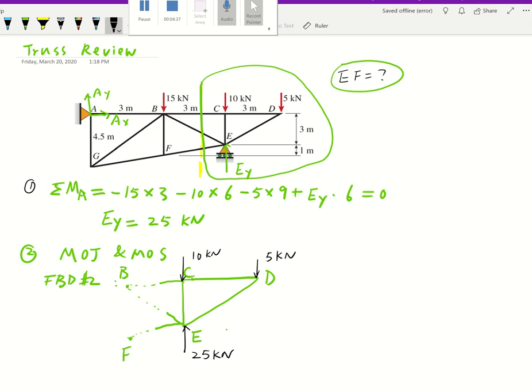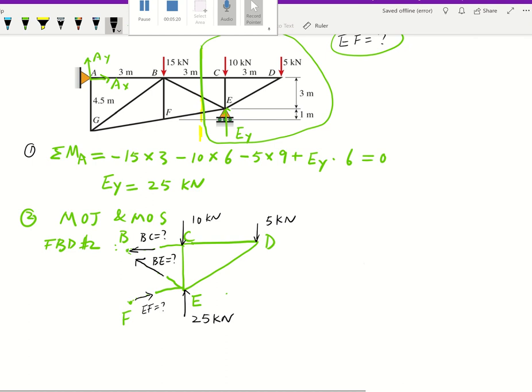Remember in truss, whenever you cut a member you are going to have a force. At BC you have the liberty to assume which direction it will be. If we assume BC is going in this direction, which means the arrow is away from the structure, that's in tension. Again for BE, it's going to be along the BE direction, away from the structure so that's going to be in tension BE. For EF, it's going to be along the line of E and F, but here we assume it's pointing towards the structure, so that would be compression EF. That would be our FBD number two.